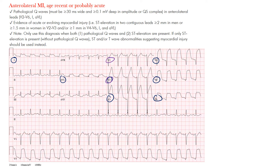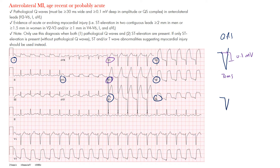We want to see pathological Q waves. They must be at least 30 milliseconds wide — the Q wave is the first negative deflection of the QRS complex. One small box is 40 milliseconds, so a Q wave of that width is certainly wide. The depth must be at least 0.1 millivolts deep. You may also have a QS complex — where there is only a Q wave with no R wave. These findings should be seen in V2 through V6 and in lead I and aVL.